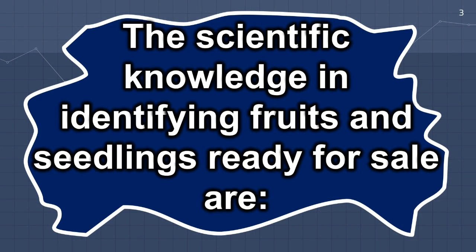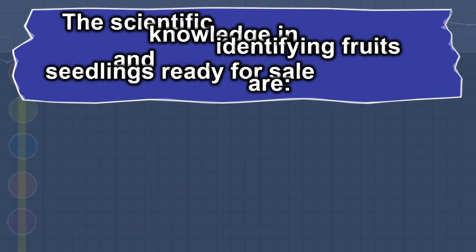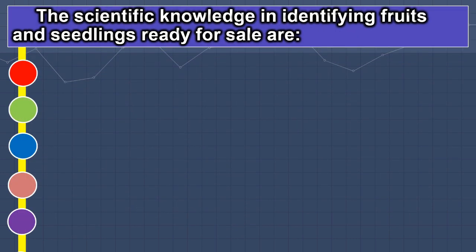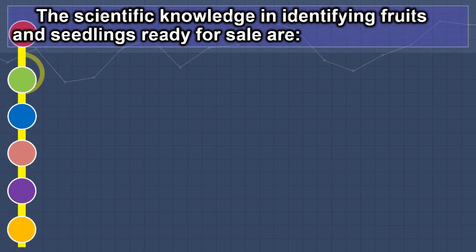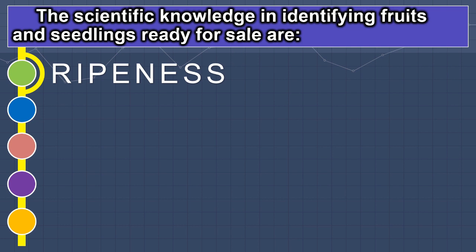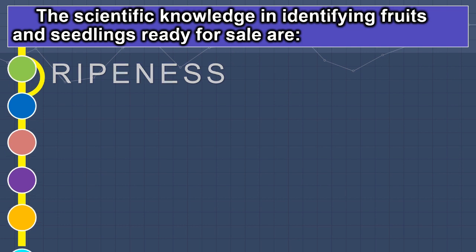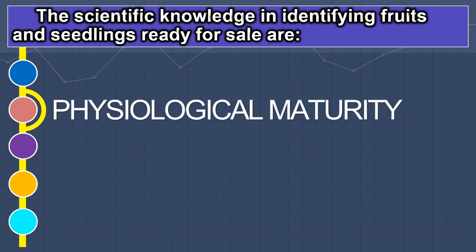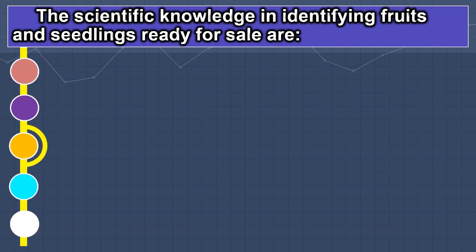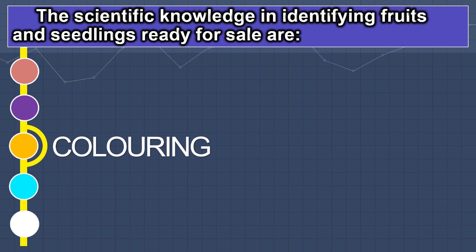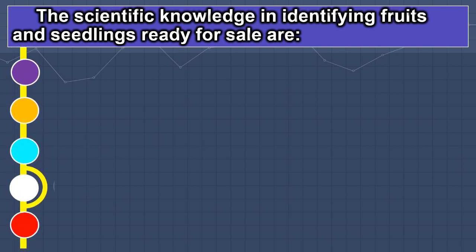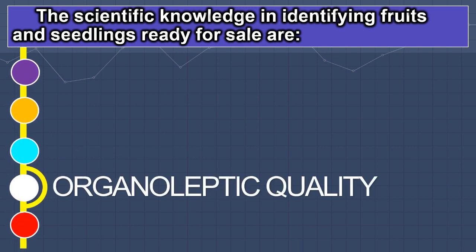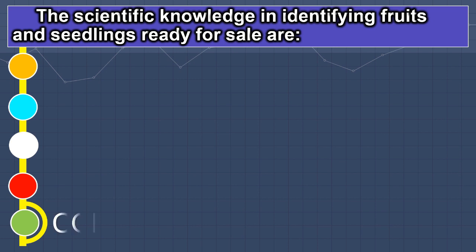The scientific knowledge in identifying fruits and seedlings ready for sale includes: one, ripeness; two, physiological maturity; three, coloring; four, organoleptic quality; and five, commercial maturity.